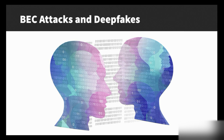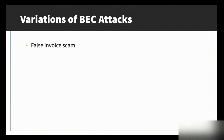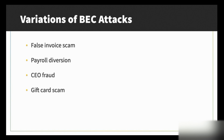BEC criminals sometimes use spoofed emails with forged headers or lookalike domains. Variations of BEC attacks include the false invoice scam, payroll diversion — tricking HR to redirect salary payments to a fraudulent account — CEO fraud, the gift card scam where victims buy gift cards and send the serial numbers to attackers, and home buyer fraud where buyers are tricked into transferring funds to fraudulent accounts.